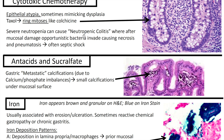Next up we've got cytotoxic chemotherapy. With some chemotherapies you're going to see epithelial atypia, sometimes mimicking dysplasia. The taxol class also leads to those ring mitoses, like colchicine — so colchicine and taxanes both produce ring mitotic figures. You can also have severe neutropenia, which can cause neutropenic colitis, where after mucosal damage, opportunistic bacteria invade, causing necrosis and pneumatosis, and can even lead to septic shock.